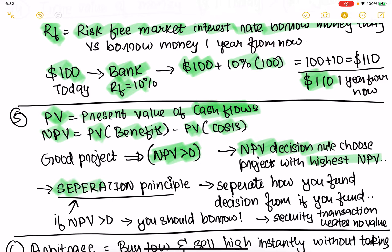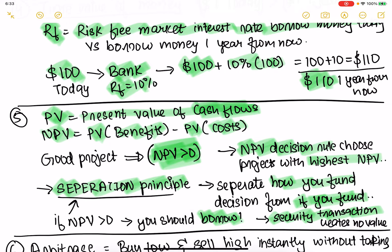The separation principle says that how you fund your investment should be a separate decision from whether you fund the investment. Whether you fund it should be based on NPV — if it has a positive NPV, you fund it. How you fund it, whether you have money now or you're going to borrow, is a separate decision. A security transaction — raising money through equity or debt — creates no value. Anyone who can borrow should be able to fund a good project. The key learning: anyone with a good project idea should fund it.